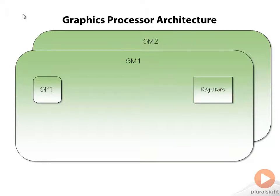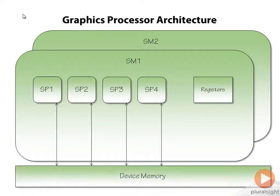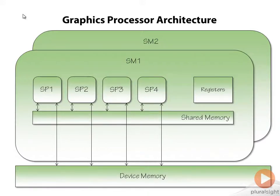Now let's add a few more CUDA cores. These cores can interact with the registers as well as several different types of memory that are available. First, there is device memory, which is available to all streaming multiprocessors for reading and writing — it's kind of shared between them. And then there is shared memory, which is available to streaming multiprocessors individually, and it's also of a read-write variety.